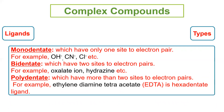Ligands ki types hoti hain: Monodentate, bidentate, polydentate. Monodentate ligand ek electron pair donate karti hai. Iski examples hain OH, CN, aur chloride — inke paas ek electron pair hota hai jo donate hota hai.